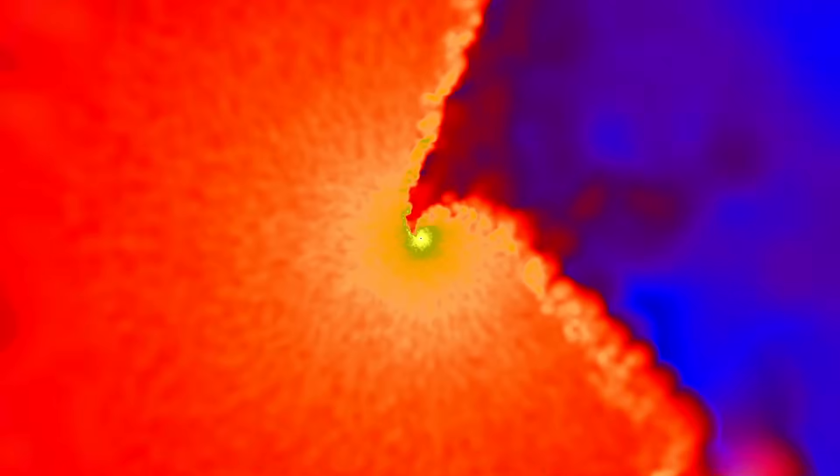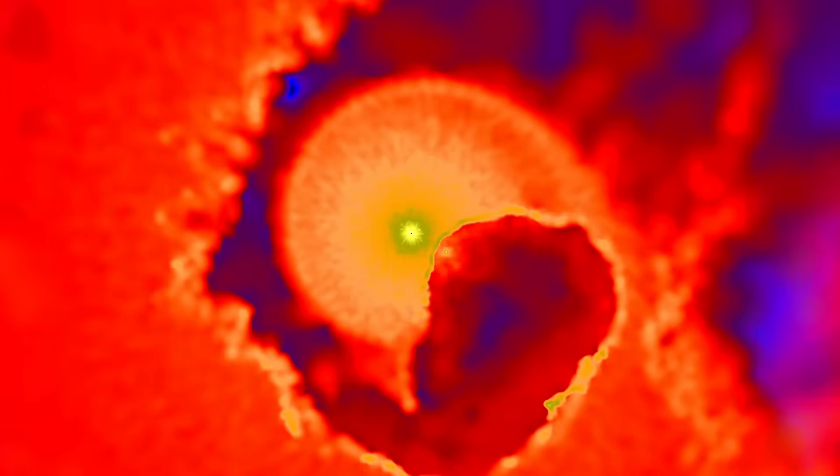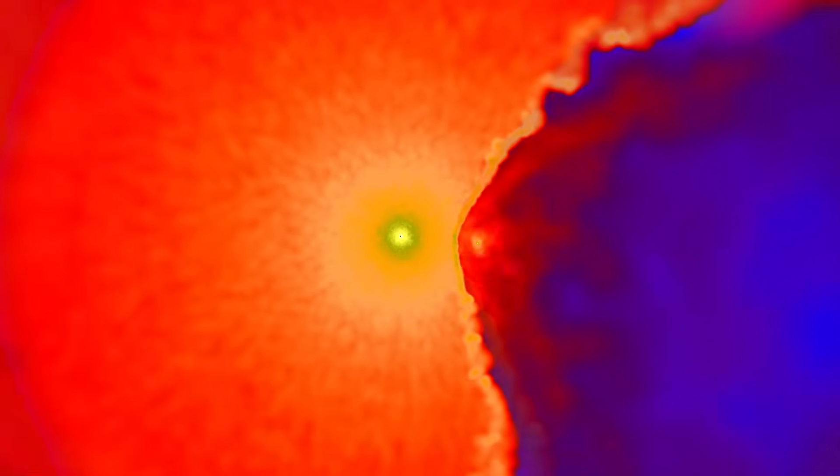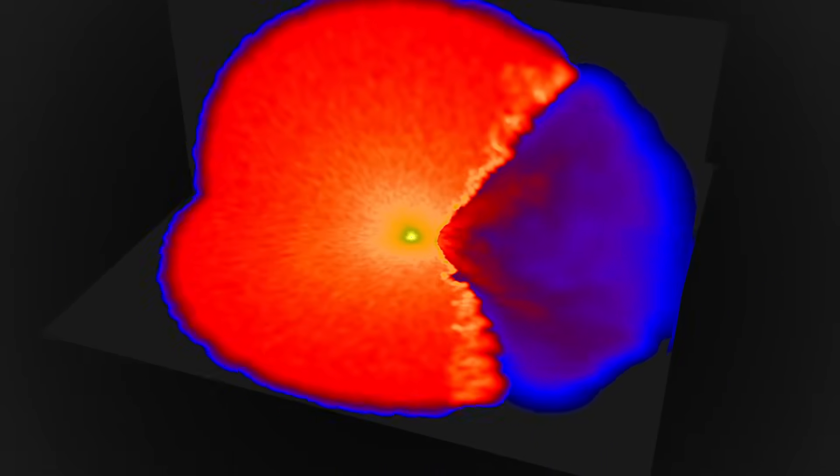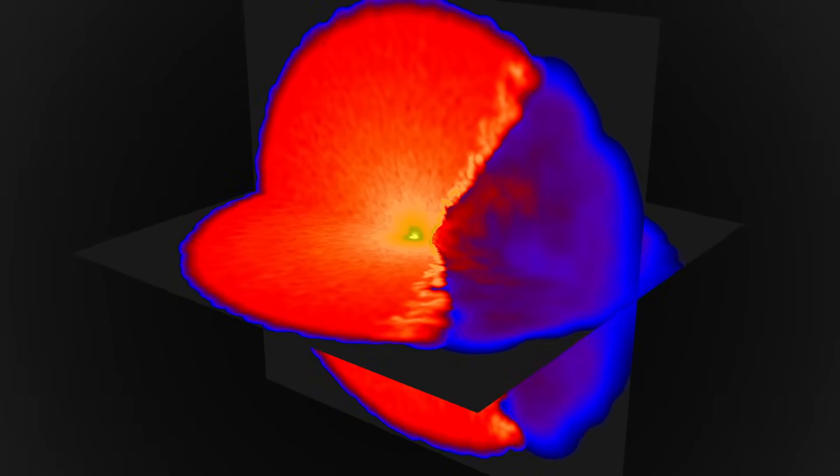But near periastron, the secondary whips around the larger star, carving a tunnel through the primary's dense wind. The secondary star's rapid motion changes the collision zone from head to tail. The smaller star's faster wind flows out along the cavity it created, and then crashes into the outward-moving wind of its companion.